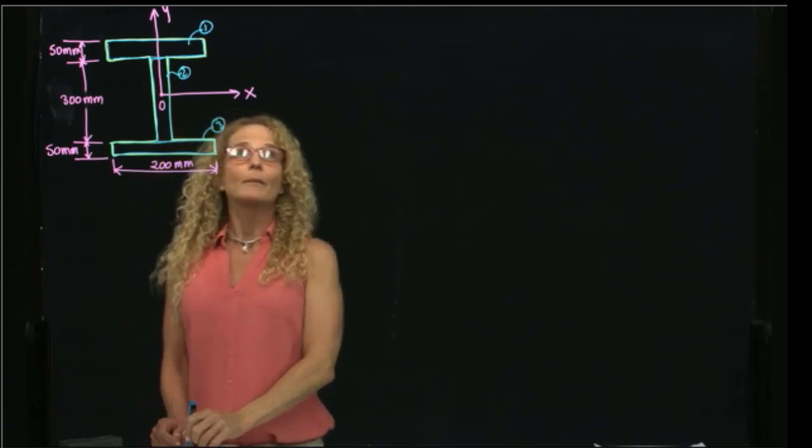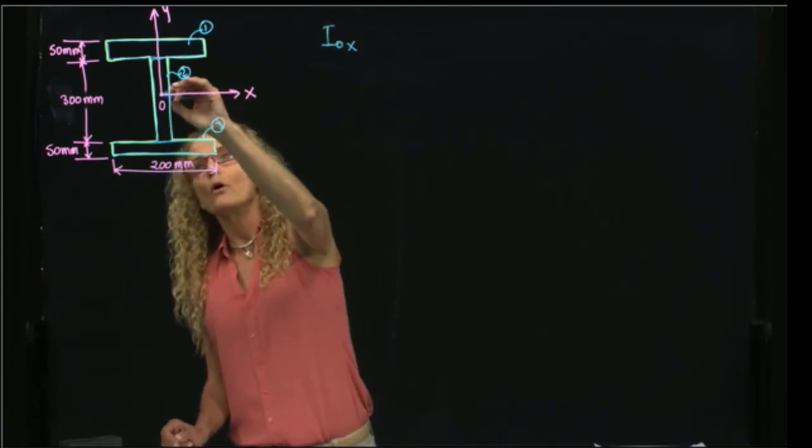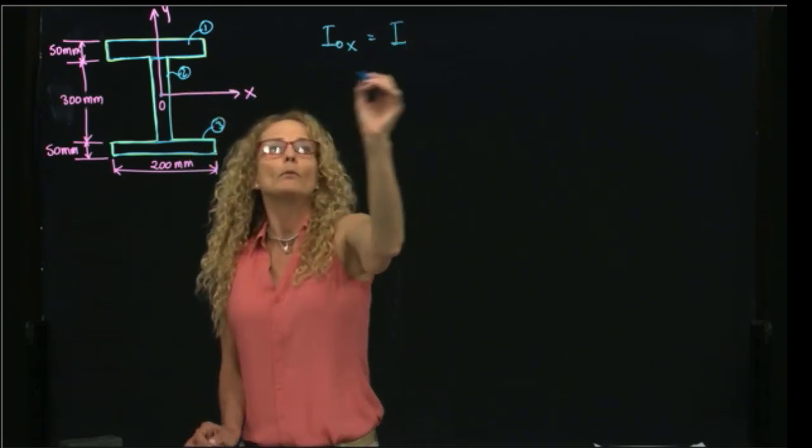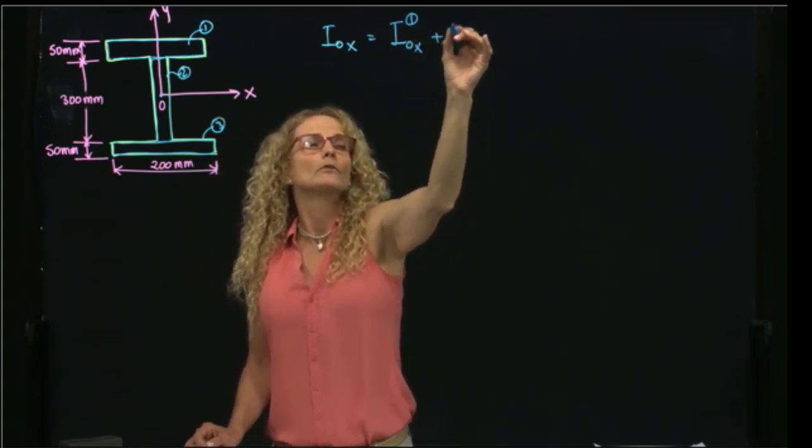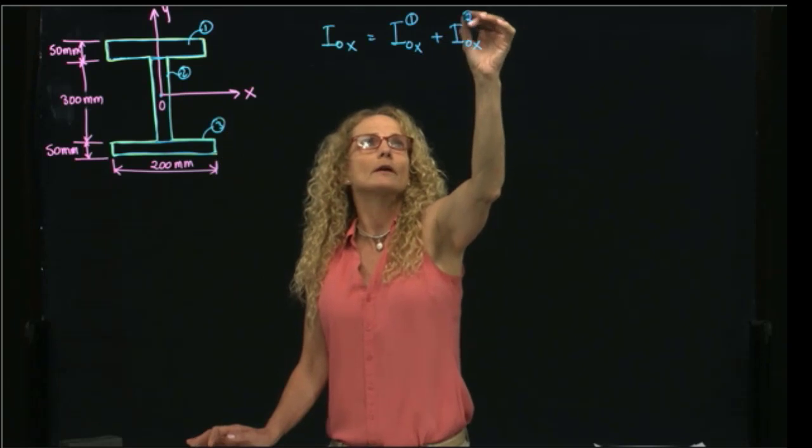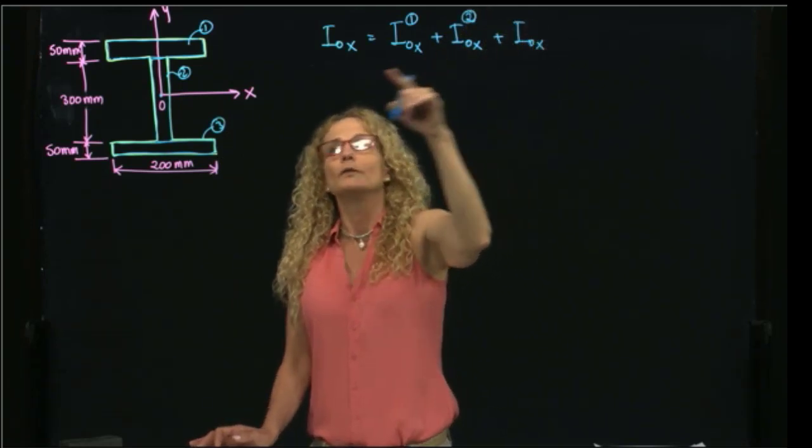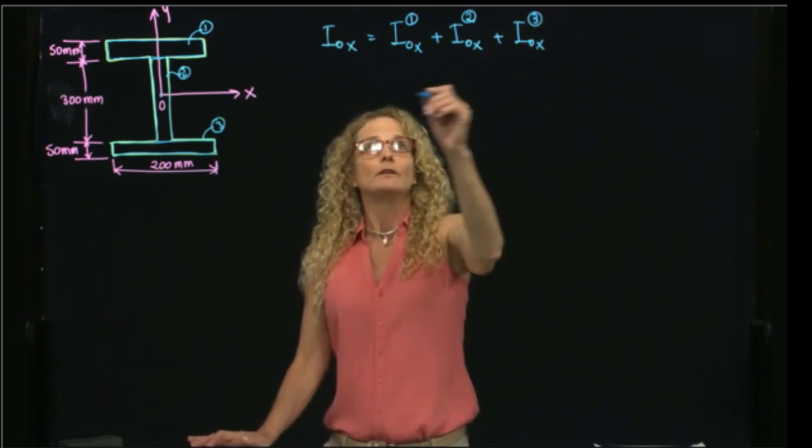And the area moment of inertia with respect to the point O will be equal to the area moment of inertia of the first figure plus the area moment of inertia with respect to that point O of the second figure plus the area moment of inertia of the third figure. So let's calculate each of these ones.